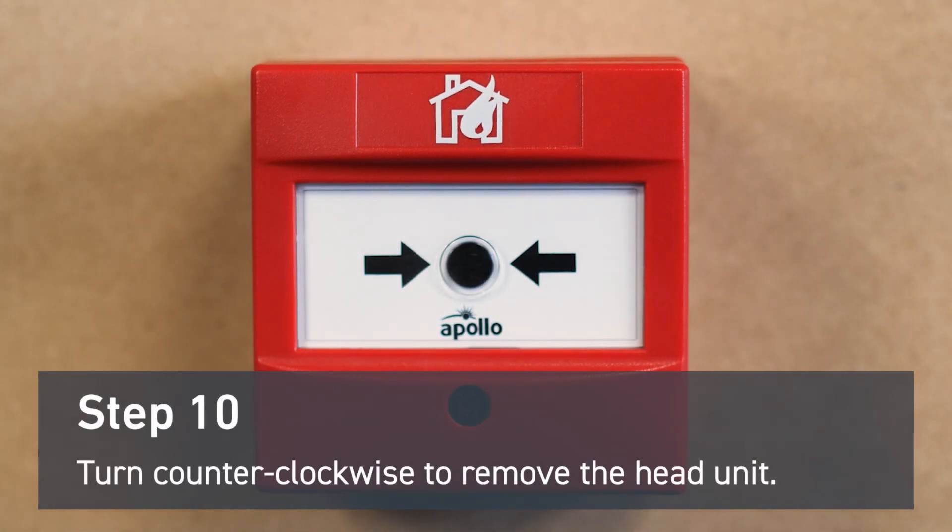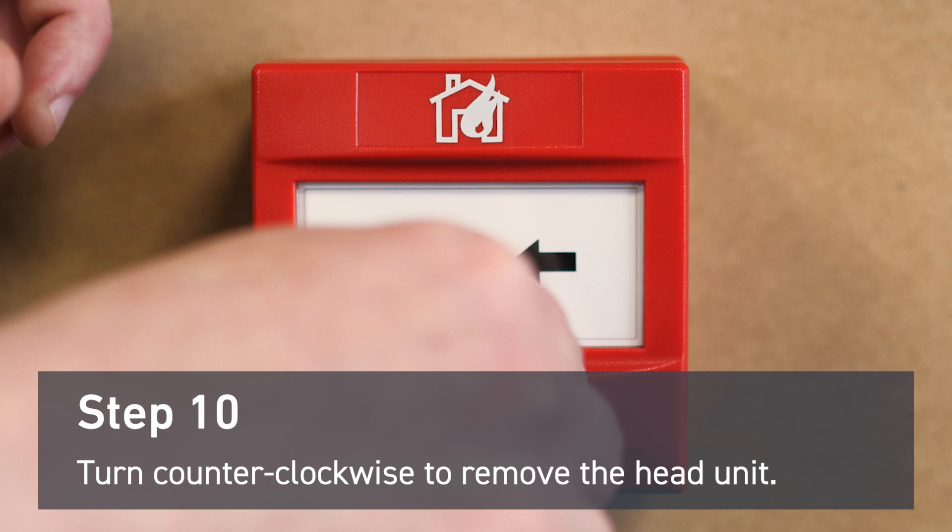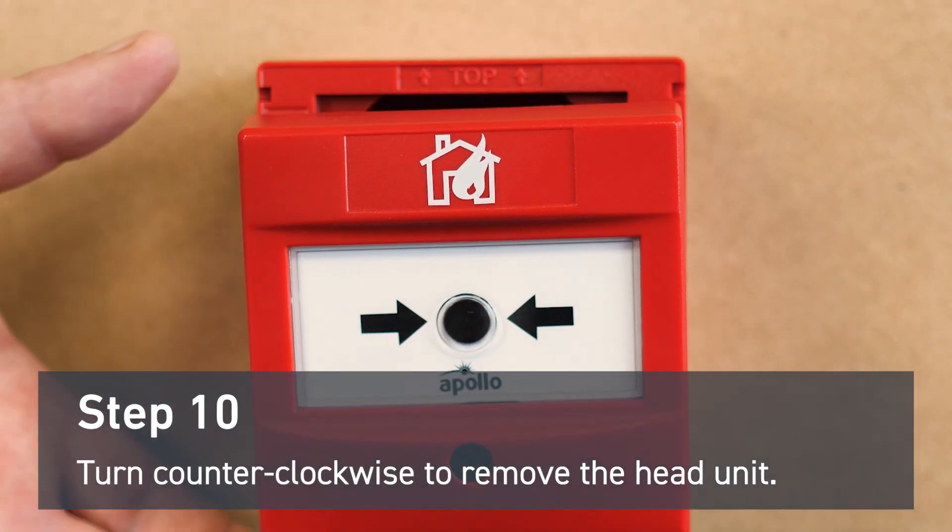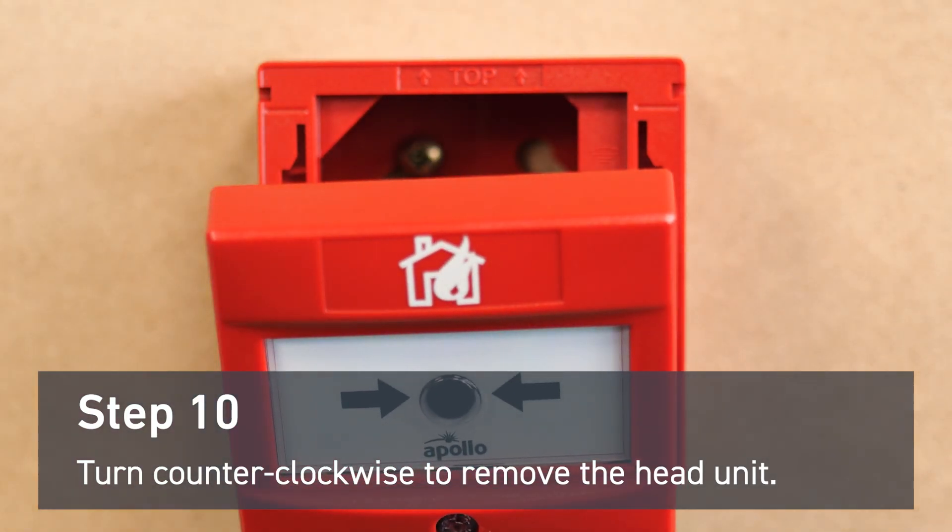To remove the head unit you'll also need the reset key. First insert it into the slot. Place a finger on the top of the head unit and turn the key counterclockwise while pushing down lightly with your finger. The unit should separate with the mounting bracket and you'll have access to the wiring.